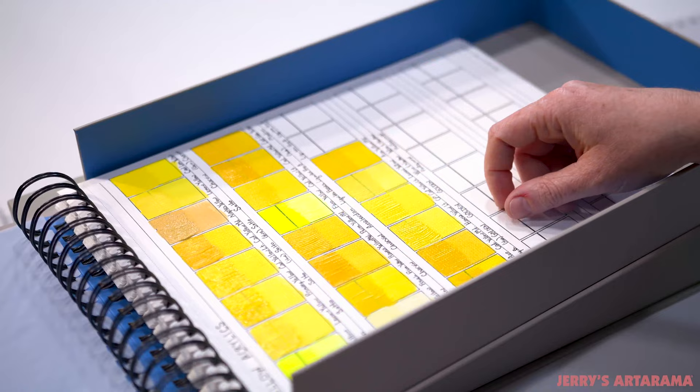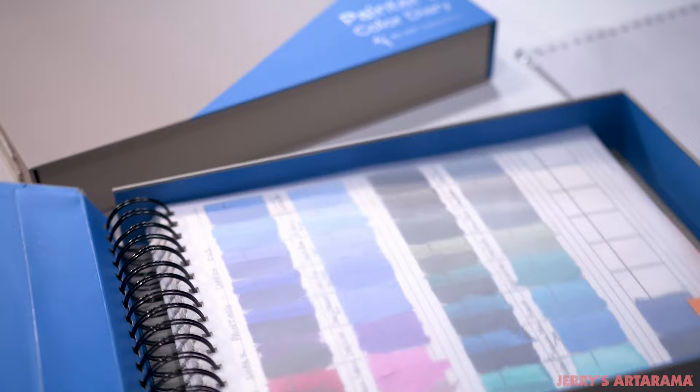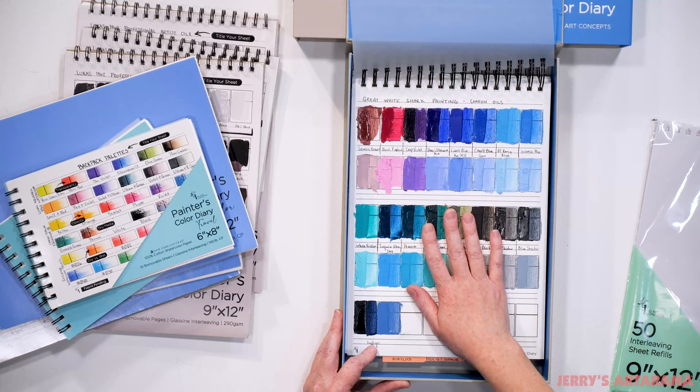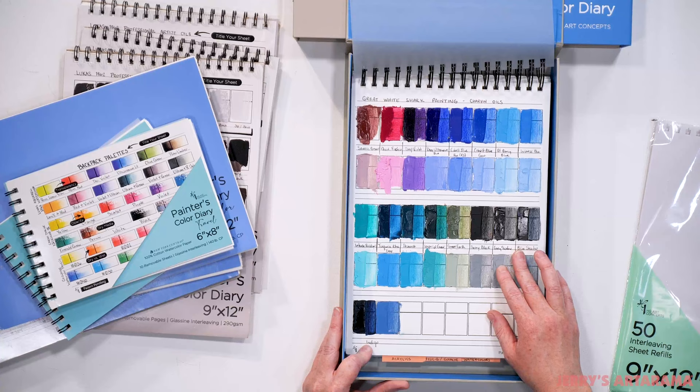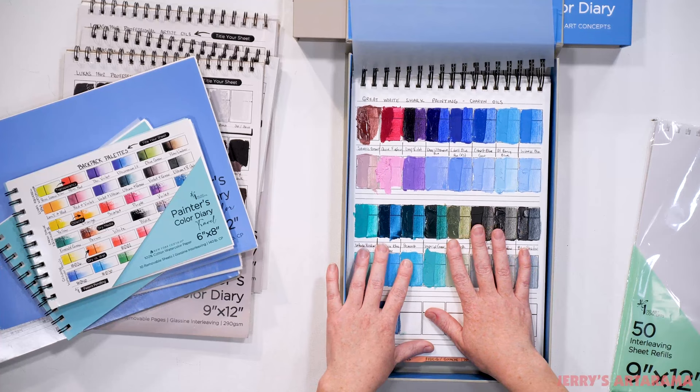The other binder I have here is organized by palettes. This one is a lot fuller because this is how I tend to work on an everyday basis. Specifically this one right here on the top is my great white shark painting that I did here in Jerry's studio. These were the palettes that I was trying to figure out which one I wanted to use. Now I know which ones I used in that painting, so if I ever need to touch it up or if I sell it, I can move this to a sold binder and keep track of what I've used.